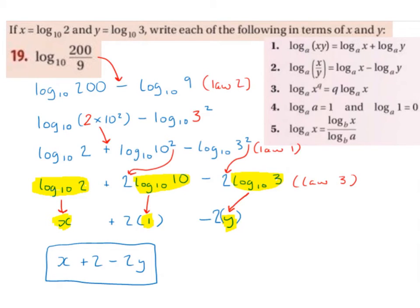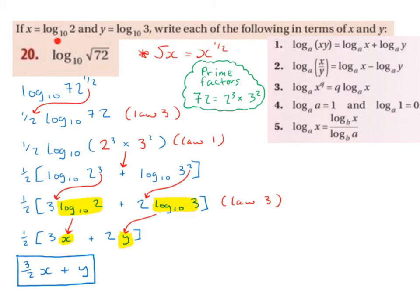So the answer is x plus 2 minus 2y. For the second part, we again have x equals log base 10 of 2 and y equals log base 10 of 3, and we want to write log base 10 of root 72 in terms of x and y. The first thing I'll do is rewrite root 72 as 72 to the power of a half, since the square root of any number equals that number to the power of a half. Then I apply Law 3 to bring the half down in front, giving a half times log base 10 of 72.